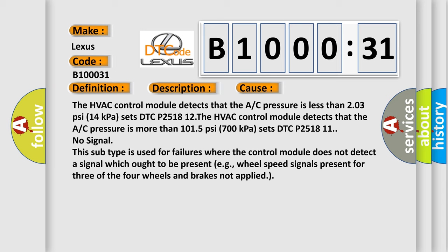No signal: this subtype is used for failures where the control module does not detect a signal which ought to be present, for example, wheel speed signals present for three of the four wheels and brakes not applied.